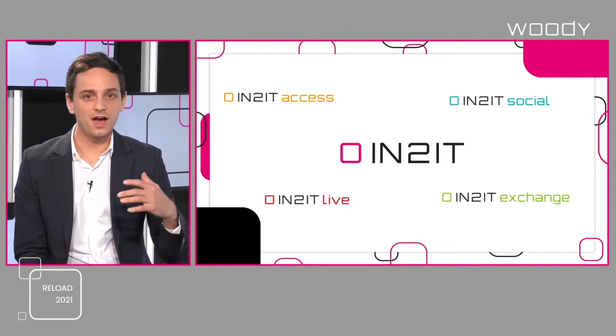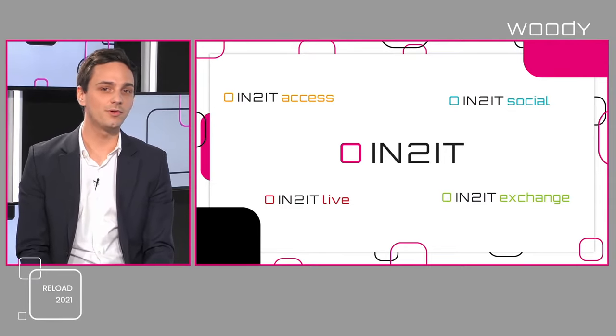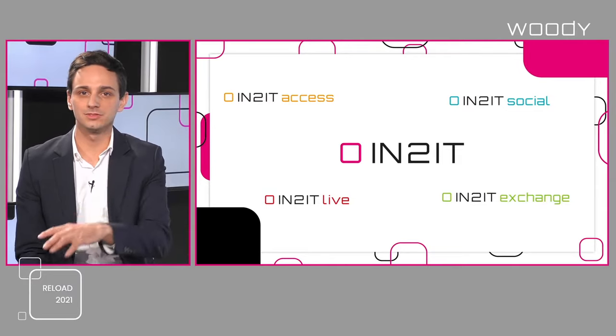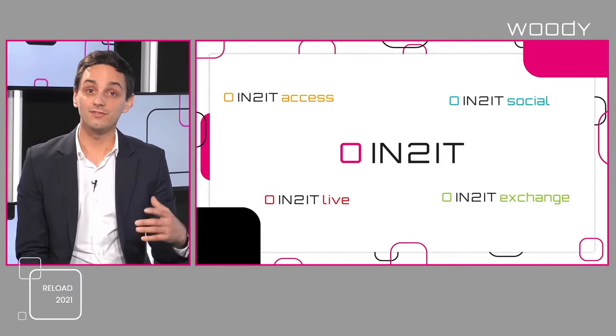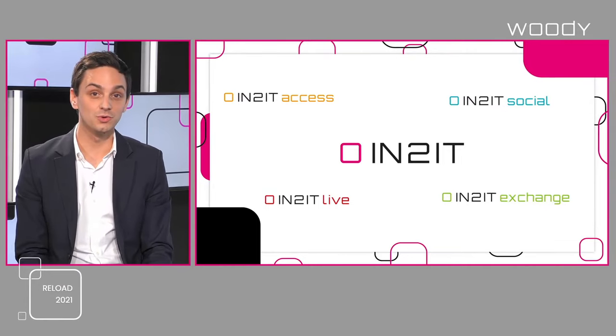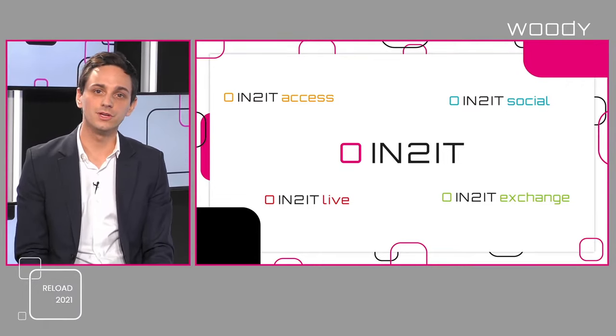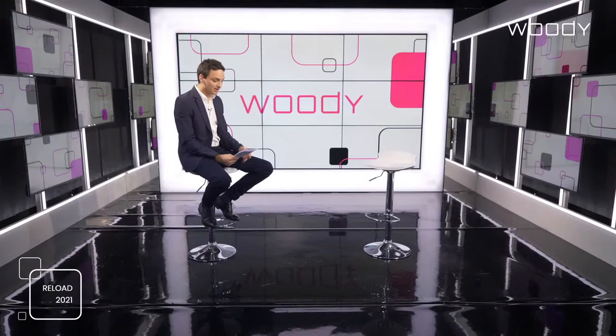Just before we get started, a quick reminder about our announcements from yesterday's first session. We introduced a redesigned product line with four new Woody products. We have Intuit Access for manual ingest by journalists and operators, Intuit Exchange for all automated workflows across PAM, MAM, storages, and web. We have Intuit Social for working with content from social networks and the web, and Intuit Live for the recording of all kinds of live sources. Now it's time to start the first part: how to use open data sources to produce news content.